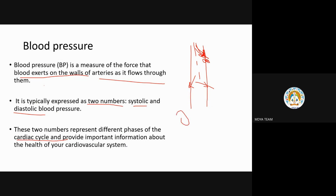The upper number and the lower number — we commonly say 120 over 80. These two numbers decide whether your heart is healthy or if there is some problem.